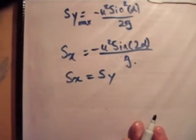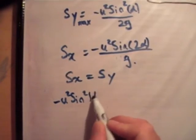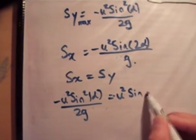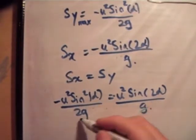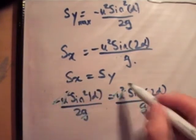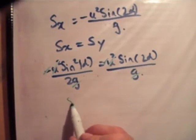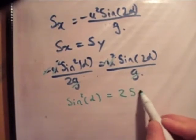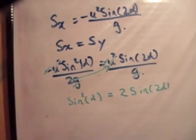So we say that s sub x is equal to s sub y. Therefore we get like this, and cross at that, that, that, that, that, and that. And we get that, we have where I brought up this 2, like so.